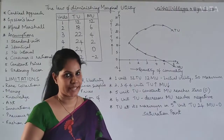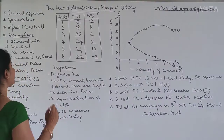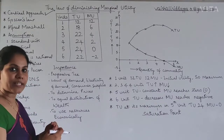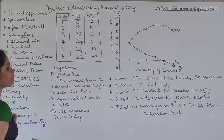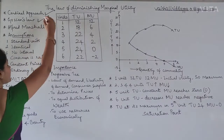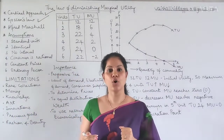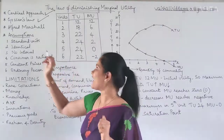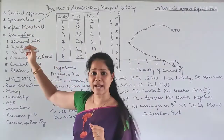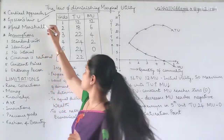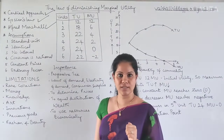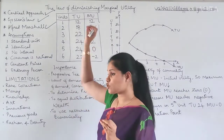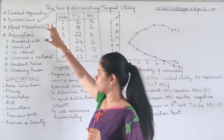So what is the law of diminishing marginal utility? This law is one example of the cardinal approach. This theory was introduced by Gosson, who is a German economist — that's why we call it Gosson's law. After that, this theory was finally popularized by Alfred Marshall, who briefed it very nicely and developed many other theories from it.